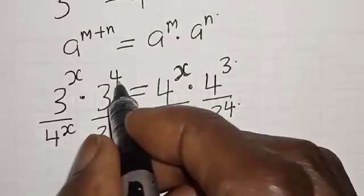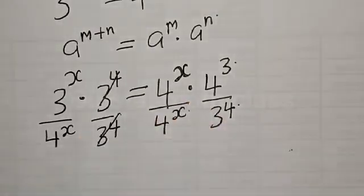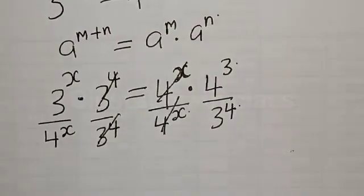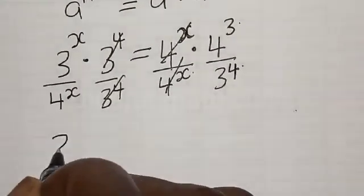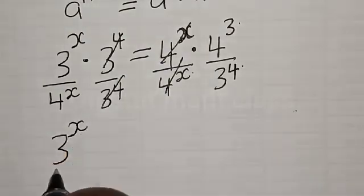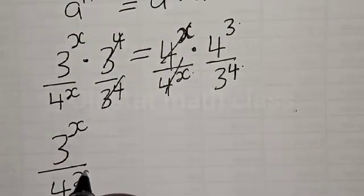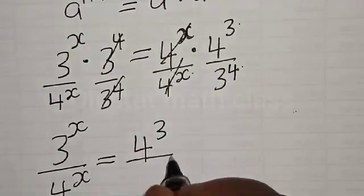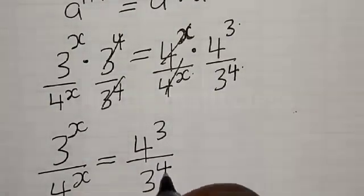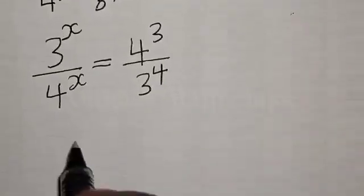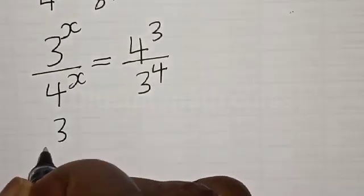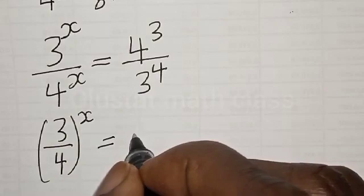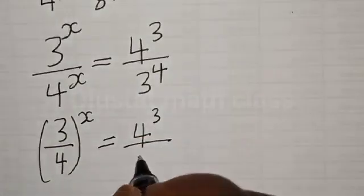After simplifying, we get 3 divided by 4 all raised to power x, which equals 4 raised to power 3 divided by 3 raised to power 4.